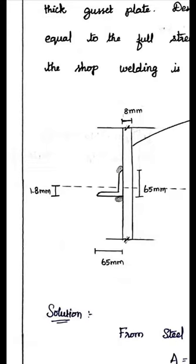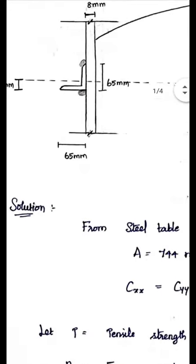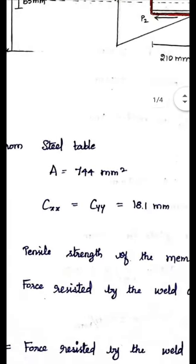The load is not directly given; we must calculate the strength of the angle section. First we need the area of the section. From the steel table, the area of the angle section ISA 65 by 65 by 6 is 744 mm². Since it is an equal angle, the centroidal distance is equal from either side — 18.1 mm.